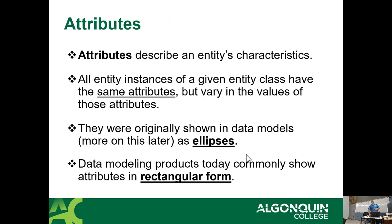Attributes describe an entity's characteristics. All entities will have attributes. All instances of a given entity class will have the same attributes, but the values will vary. Going back to students as our example, we'd list out attributes like first name, last name, date of birth, phone number, address, email. Every student has the potential for the same set of attributes, but the values in these attributes will vary.